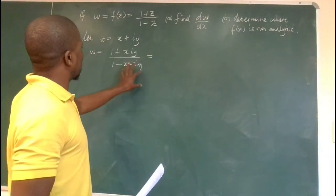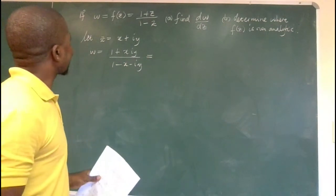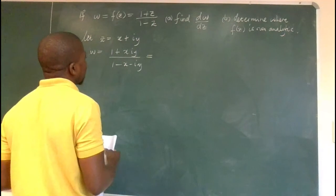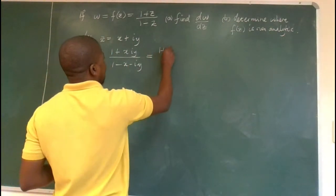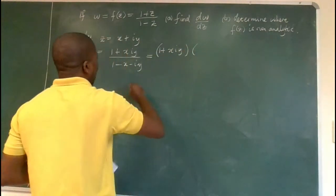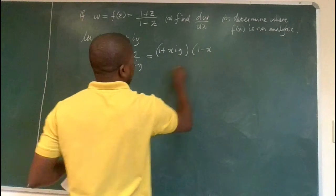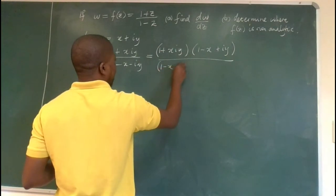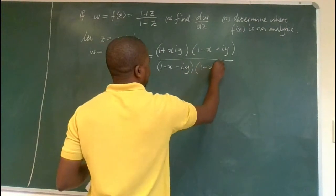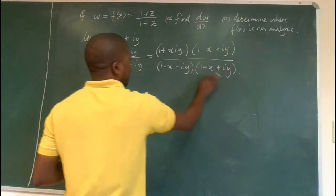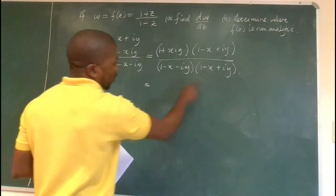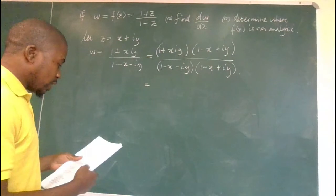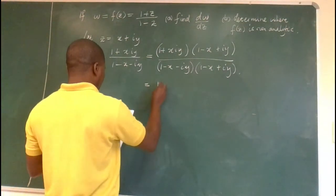To clear off the complex quantity in the denominator, we multiply by its conjugate. So we take (1 + x + iy) multiplied by (1 − x + iy), all over (1 − x − iy) multiplied by (1 − x + iy). This is the complex conjugate of the denominator — we normally do this to clear complex quantities from the denominator.